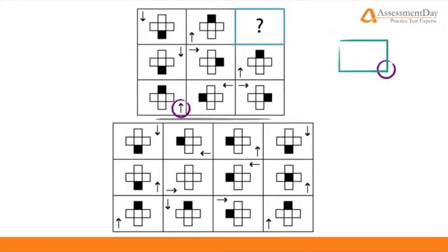If we look from the bottom left box rightwards, we can see that the arrow moves from the bottom right, top right, to top left, moving anticlockwise every box going right.